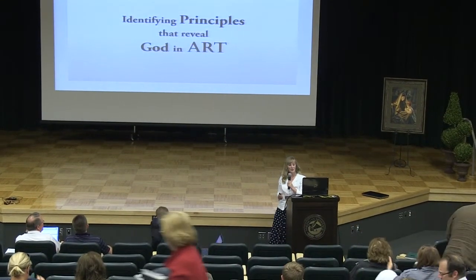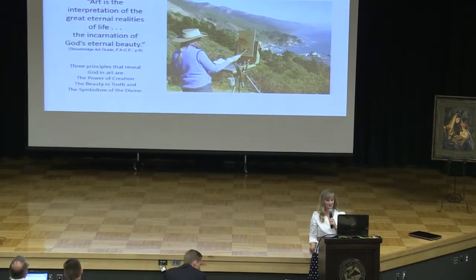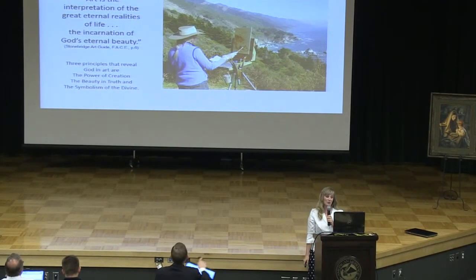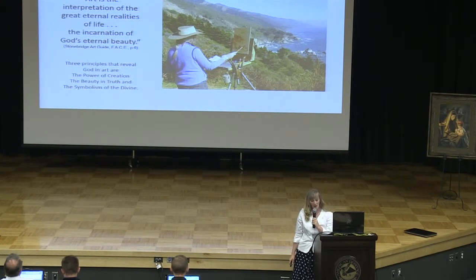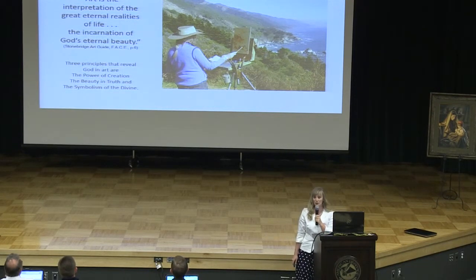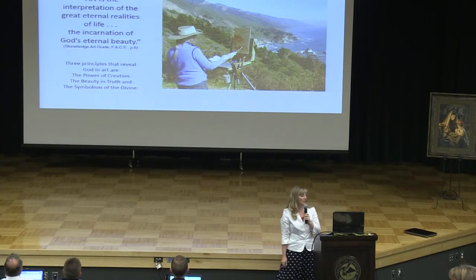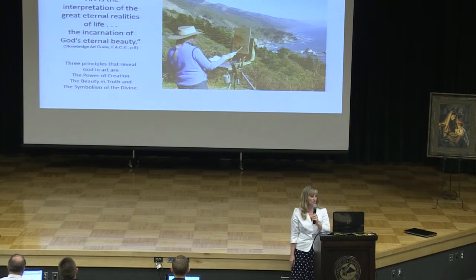We're going to talk about identifying principles that reveal God in art. Art is the interpretation of the great reality, eternal realities of life. As soon as the artist tries to embody the greatest feelings and aspirations of the human, he gets on biblical ground. Art deals with the eternal and the spiritual and is the incarnation of God's eternal beauty. The three principles we're going to look at today are the power of creation, the beauty in truth, and the symbolism of the divine in art.